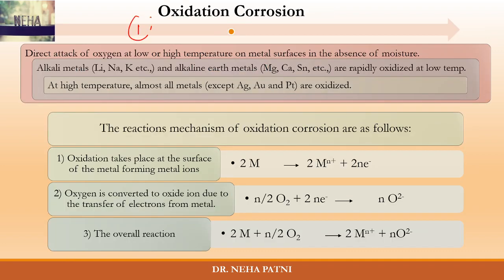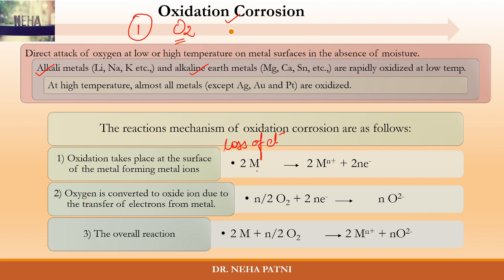The first type is attack by oxygen gas — a direct attack of oxygen, generally at low or high temperature, but with absence of moisture. That is why it is called dry corrosion, and since it involves oxygen, it is called oxidation corrosion. Almost all metals are oxidized at high temperatures, but alkali metals and alkaline earth metals are easily oxidized even at low temperature. The reaction shows oxidation, which is loss of electrons — the metal loses electrons and converts into a cation.